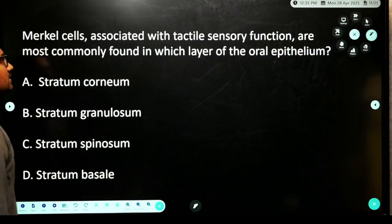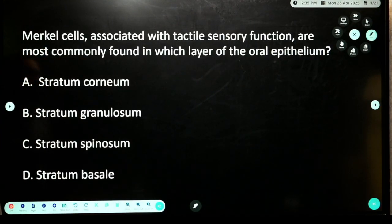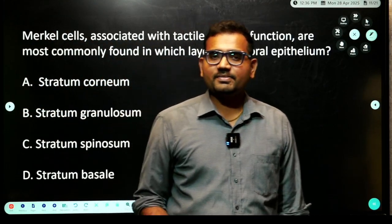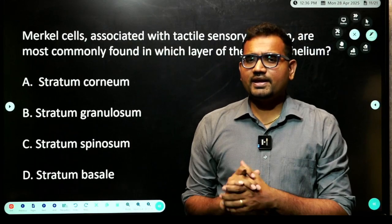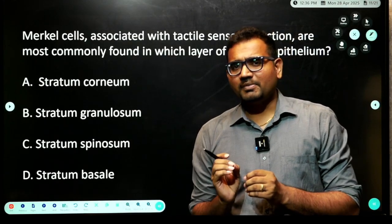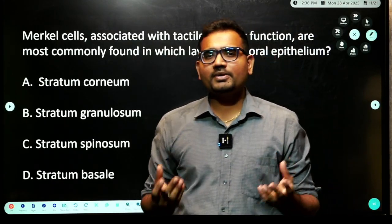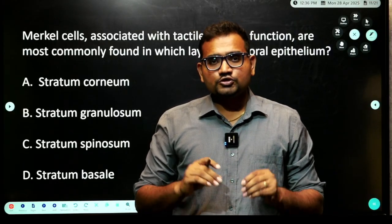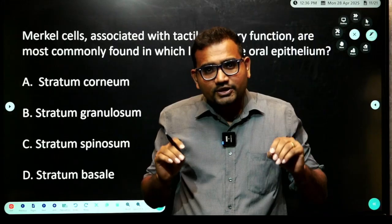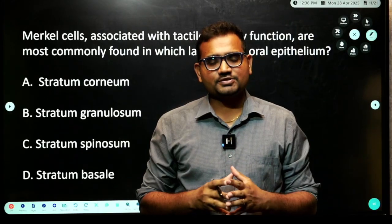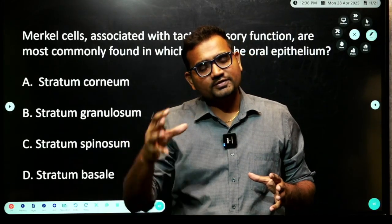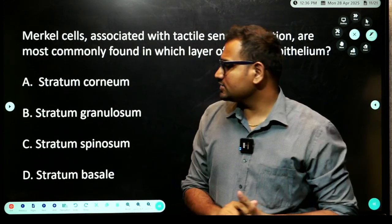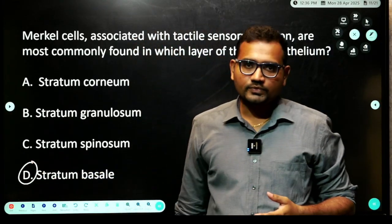Next question: Merkel cells associated with tactile sensory functions are most commonly found in which layer? Merkel cells are basically mechanoreceptors. They are responsible for mild light touch and are predominantly found in palms, soles, and more commonly in fingertips. They are associated with nerves — there will be a neurite complex with the Merkel cells. These cells are predominantly found in the stratum basale.